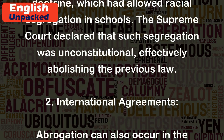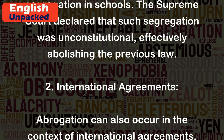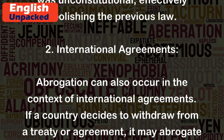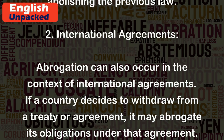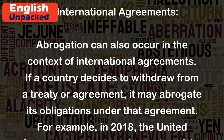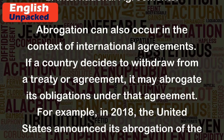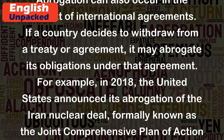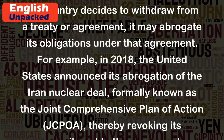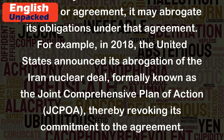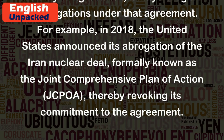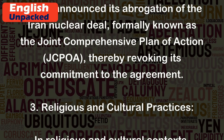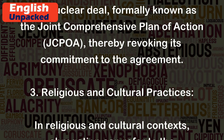2. International Agreements: Abrogation can also occur in the context of international agreements. If a country decides to withdraw from a treaty or agreement, it may abrogate its obligations under that agreement. For example, in 2018, the United States announced its abrogation of the Iran nuclear deal, formally known as the Joint Comprehensive Plan of Action (JCPOA), thereby revoking its commitment to the agreement.